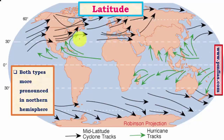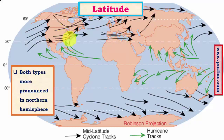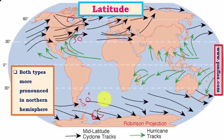Temperate cyclones form only in mid-latitude regions, between 30 and 65 degrees north or south, where warm tropical air masses and cold polar air masses converge. This convergence gives rise to an occluded front, which is the primary factor behind the formation of temperate cyclones. This applies in both hemispheres.